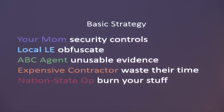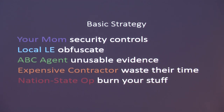Since we don't have time to share every secret I have, here are basic strategies for all five different types. For your mom — just security controls. Password protect your phone. I found out a lot of my friends share their fingerprints and pin codes with their parents on their phone still, and they're like 28, 29. For local law enforcement, we want to obfuscate everything they find so they basically don't understand what they're looking at. Since they're looking for low-hanging fruit, they'll go 'I don't know what that is' and toss it to the side. For the agent, unusable evidence — things they either can't attribute to you, or it's so messed up they can't analyze it.